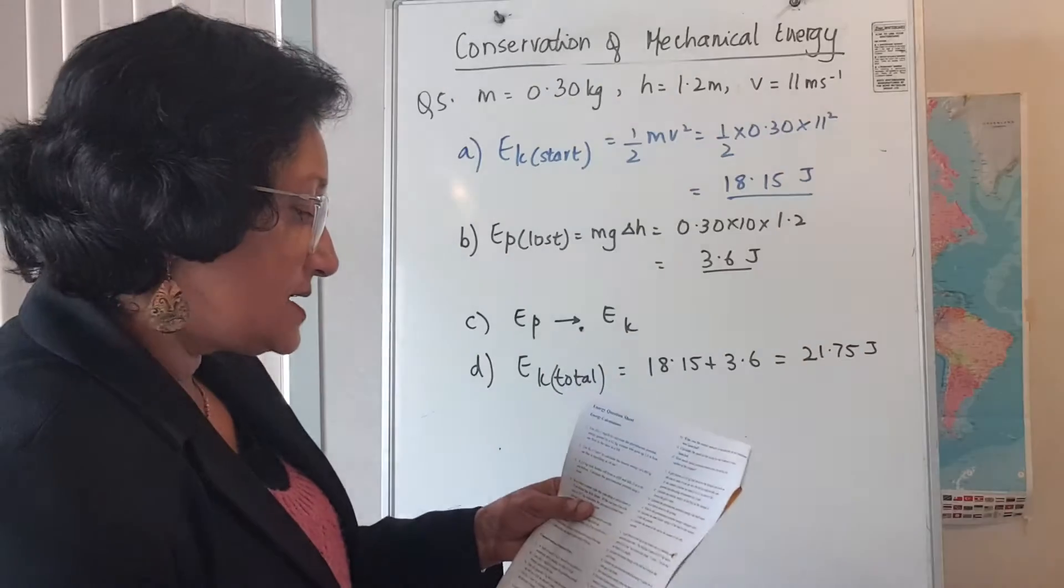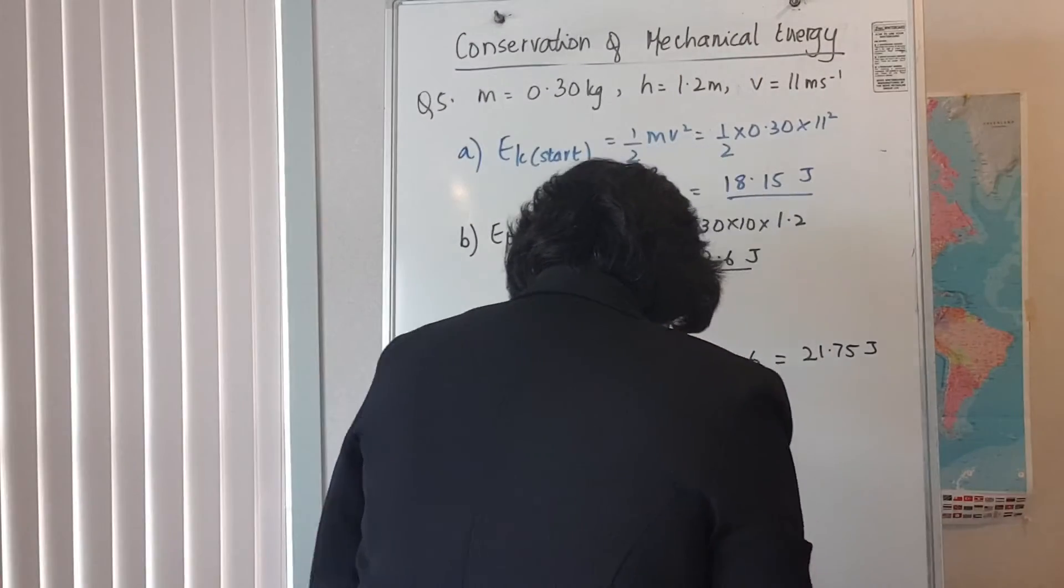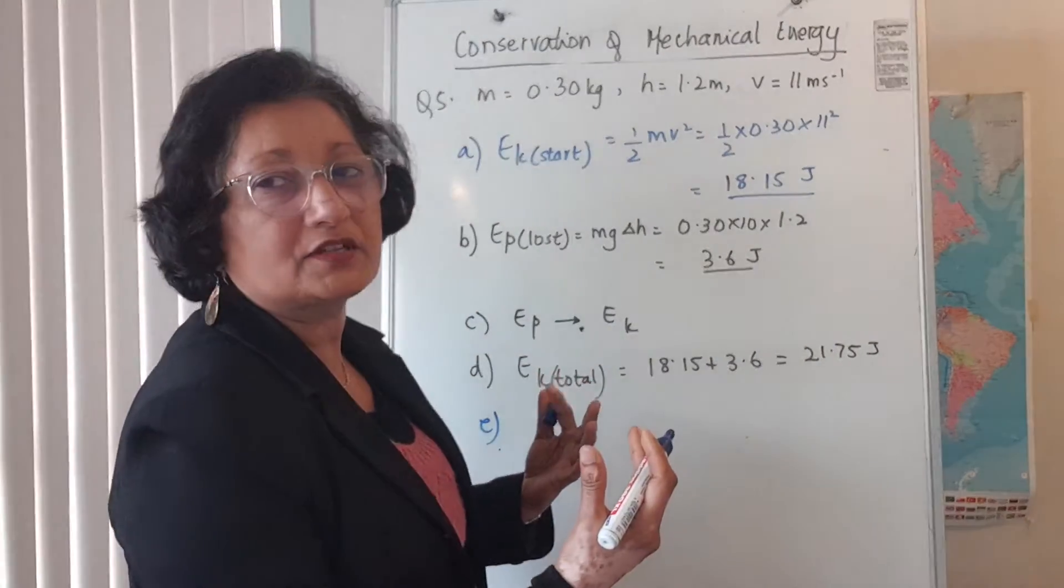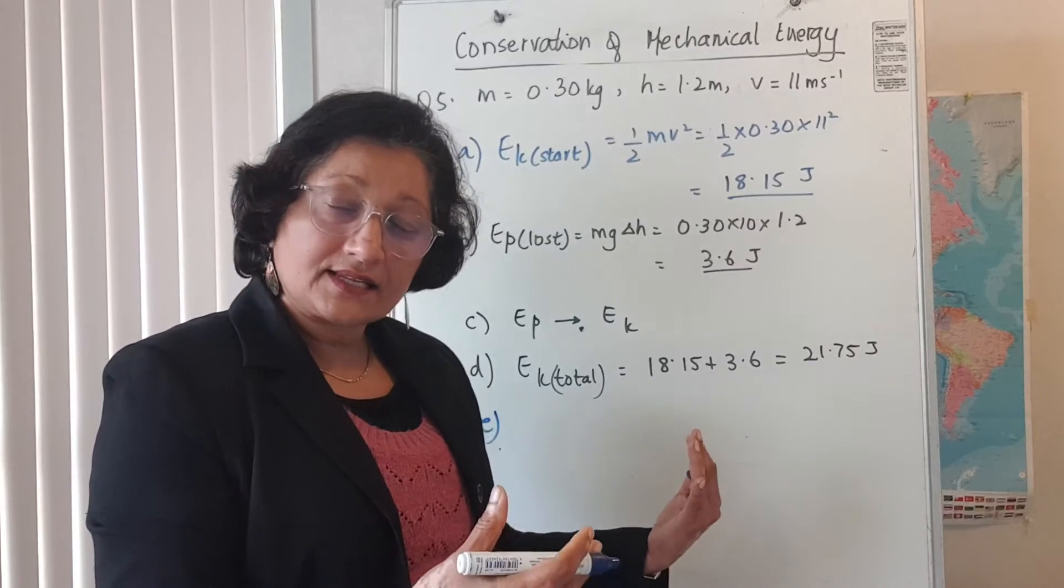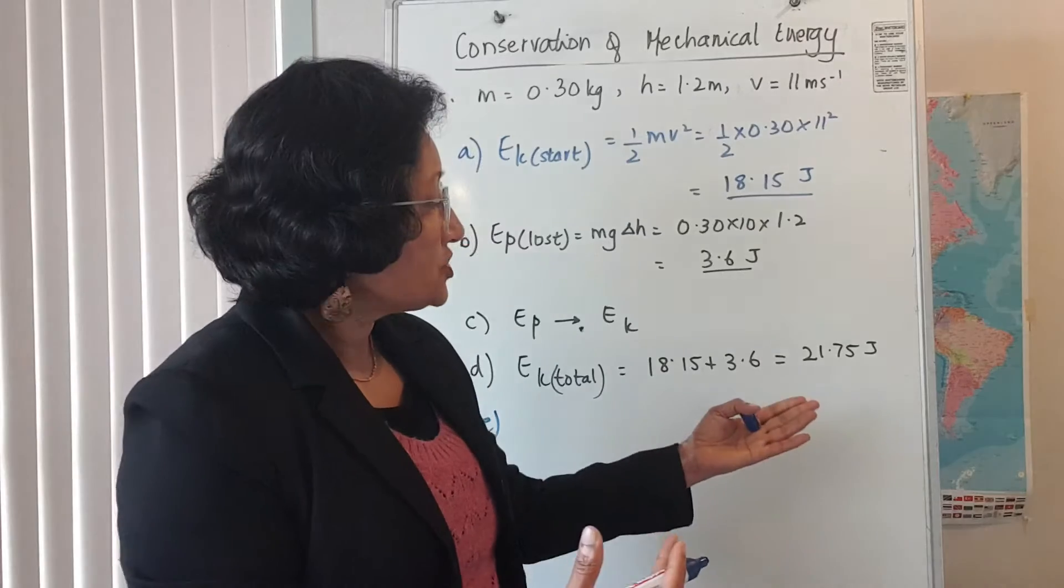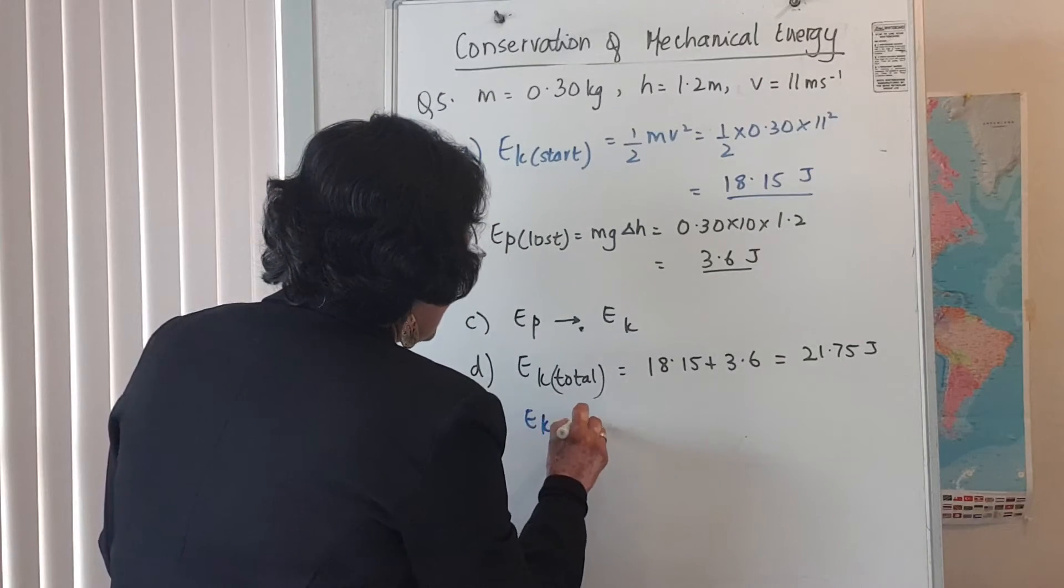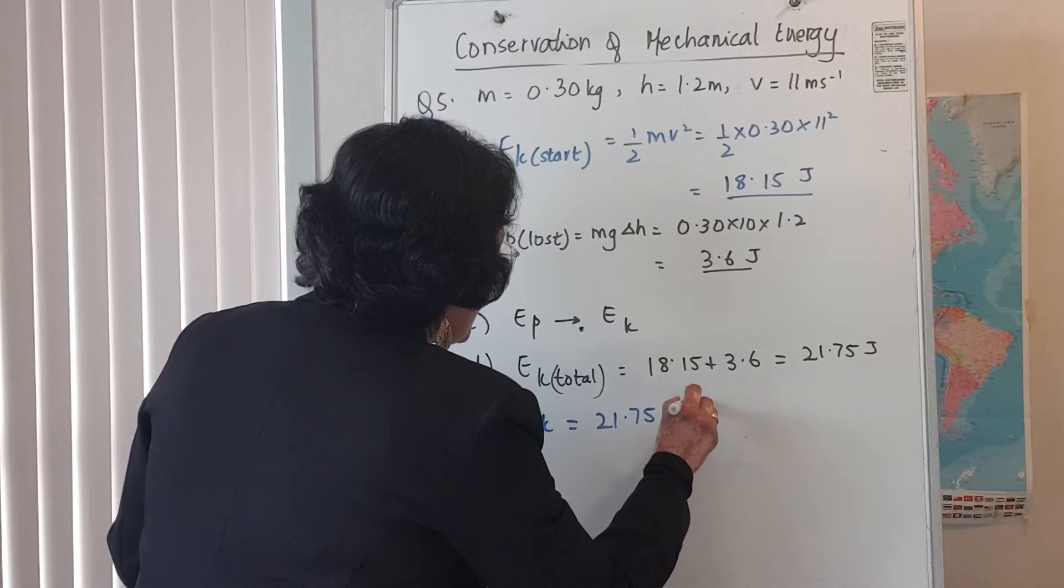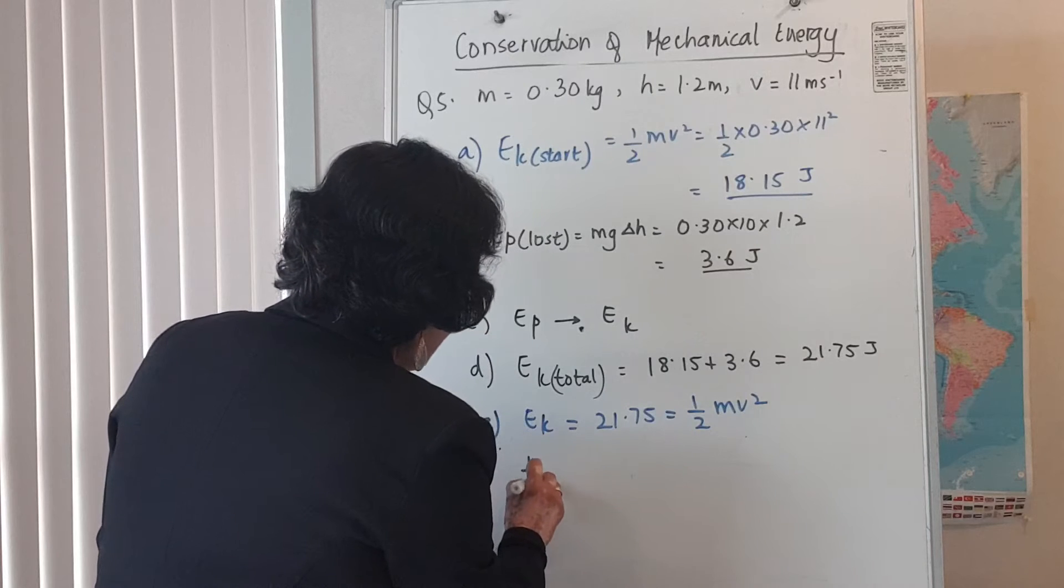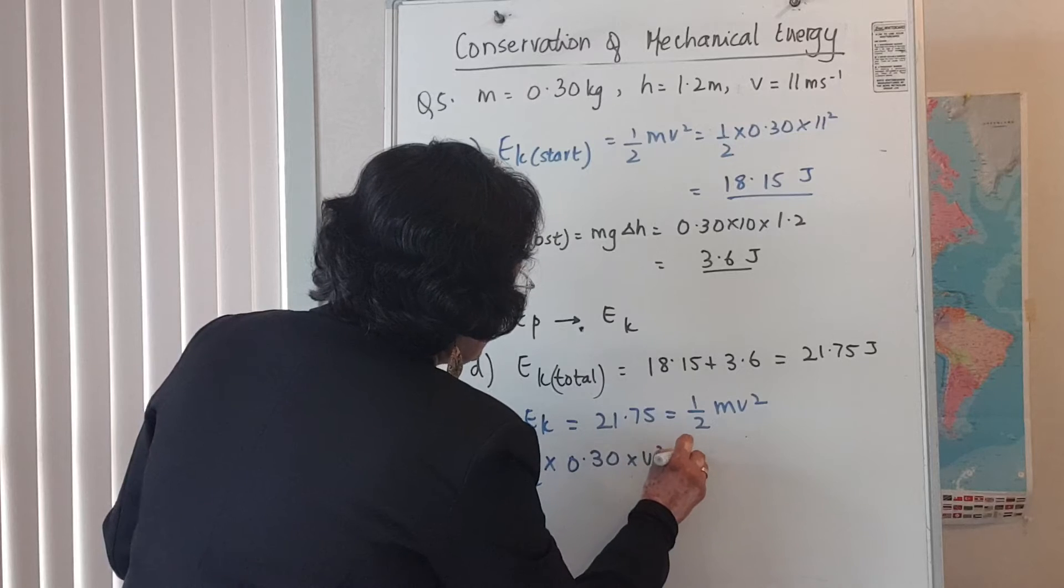The last part e is calculate the speed of the ball at the instant it hits the ground. This is in many of the questions where you have to get the speed of the ball. If you know the kinetic energy, because anything moving has got kinetic energy, and if you know the mass you can get the speed. So what we use is Ek is 21.75, and that's equal to half mv squared, or half times the mass is 0.30 times v squared. So v squared is 21.75 times 2 divided by 0.30.